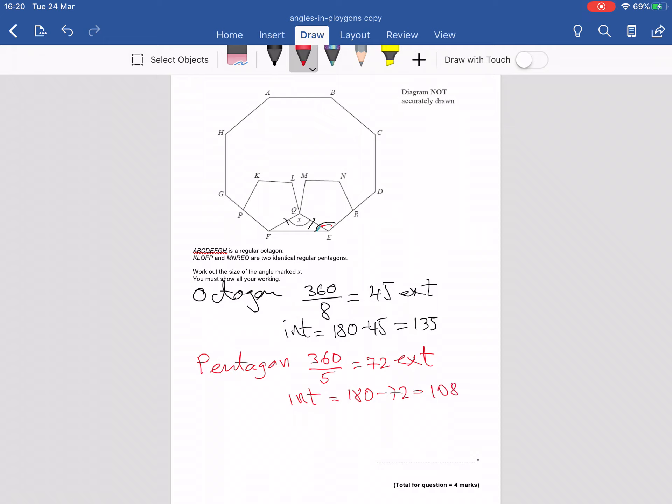And now to work out the triangle. So one of the equal angles of the isosceles triangle. Triangle equal angle. I'm going to do the interior angle of the octagon, so 135, take away 108, which is the interior angle of the pentagon. So 135 minus 108 is 27.